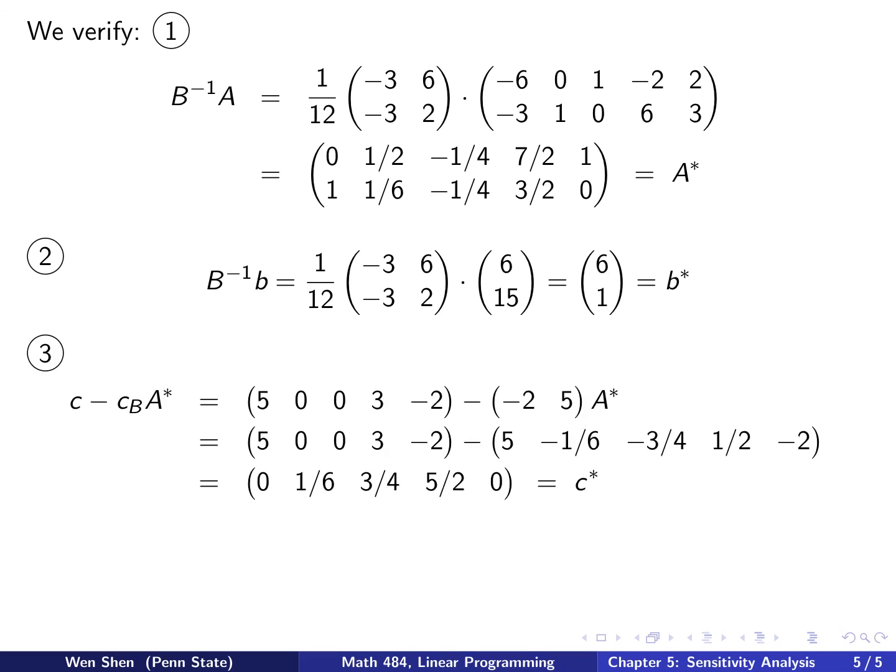The third claim is for c star. I need to compute c minus c_B times A star. C is this one, c_B is this one times A star which is here. You plug in and work out: this vector times A star gives you that one. Then do the subtraction: 5 minus 5 is 0, 0 minus negative 1/6 is positive 1/6, and so on. You get this row vector, and you see that's exactly c star.